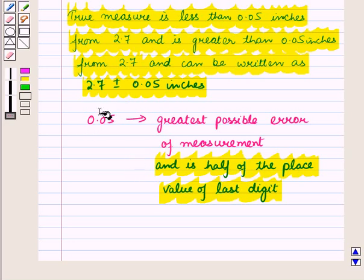You can say that the greatest possible error is one half the place value of the last significant digit. As you can see in 2.7, last significant digit is 7 which is at tenths place.